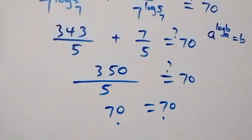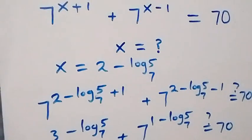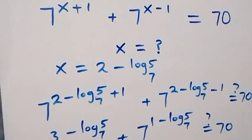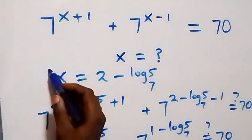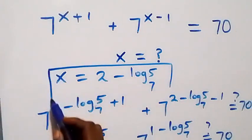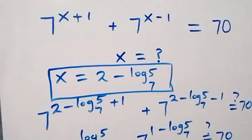Hence we conclude that x equals to two minus log five to base seven satisfies this given problem. Thank you for watching. Don't forget to subscribe for more videos and turn the notification bell on. Share this video, give it a thumbs up, and see you next class. Bye for now.